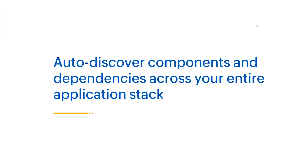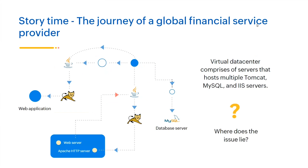Let's get started with the first topic for today, which is auto-discovering components and dependencies across your entire application stack. Let's start with the story of a real-time global financial service provider — one of our customers. This customer had their virtual data center, which comprised of servers that hosted multiple Tomcat, MySQL, and IaaS servers. Due to their complex infrastructure, they were having difficulty understanding where exactly the issue led — whether it was with the server side, the database side, or the entire application stack. They needed visibility.